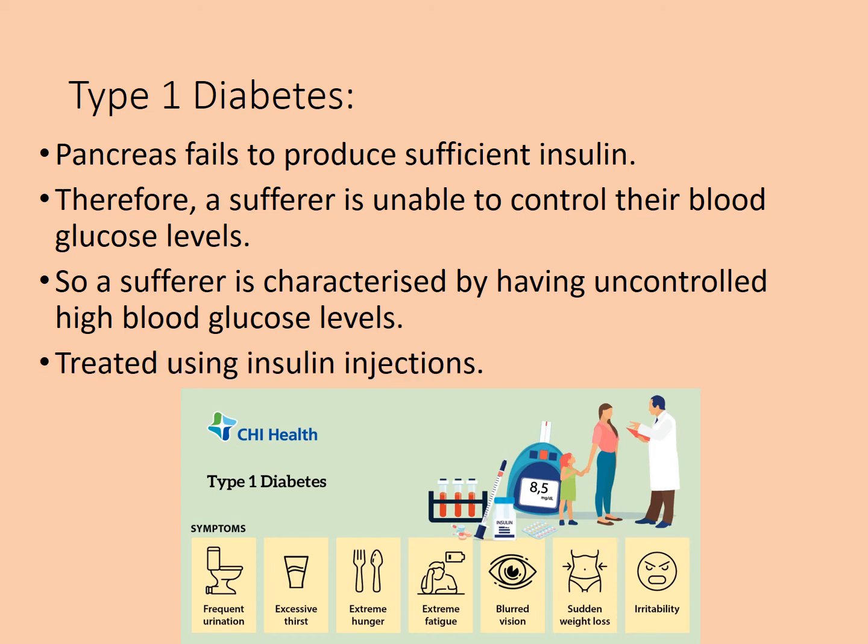Type 1 diabetes must be controlled using insulin injections, and this has to occur for life. This type develops in early life, and from that point the individual needs to inject insulin regularly to control their blood glucose levels.